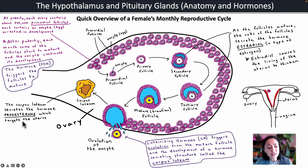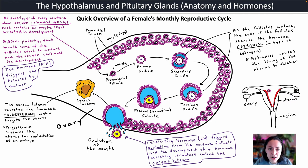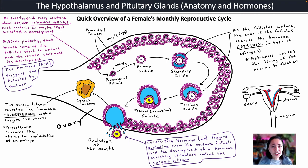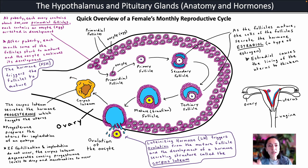Progesterone targets the uterus and prepares it for implantation of an embryo. The egg was just ovulated and the uterus is preparing for possible fertilization and implantation — progesterone increases the secretions and nutrients available in the uterine lining. If fertilization and implantation do not occur after ovulation, the corpus luteum degenerates and becomes scar tissue called the corpus albicans. When it degenerates, it stops making progesterone, and that drop in progesterone triggers menstruation.